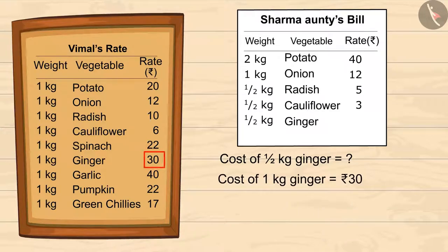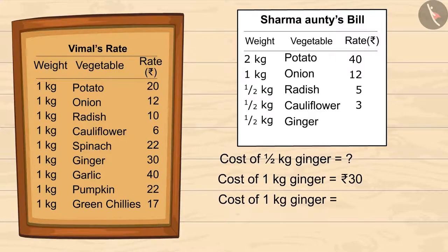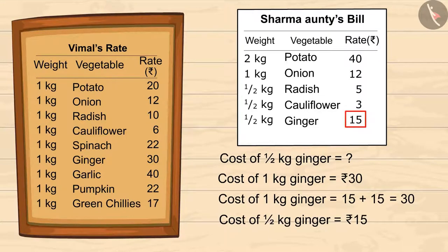1 kg of ginger costs 30 rupees, so half a kg of ginger will cost half of 30 rupees. On dividing 30 into 2 equal halves we get 15, so half a kg of ginger will cost 15 rupees.